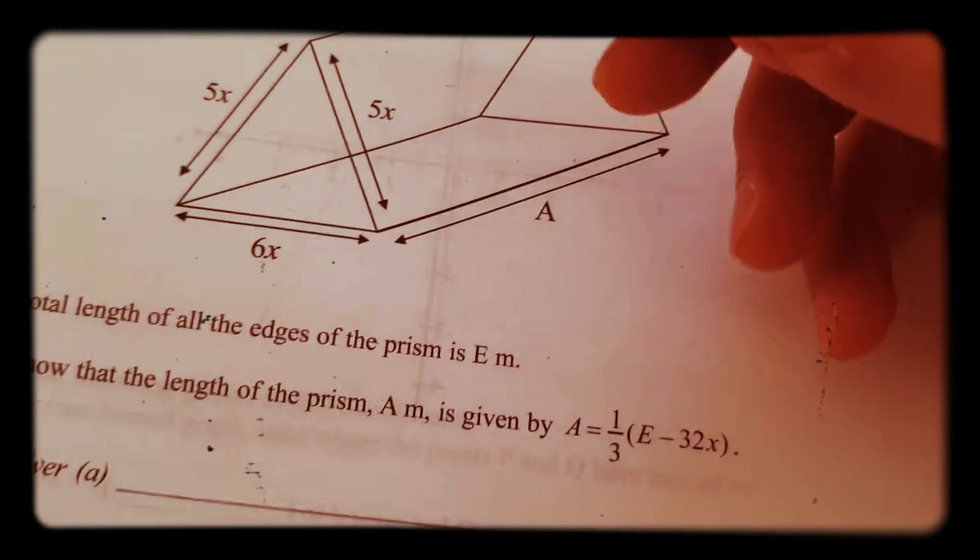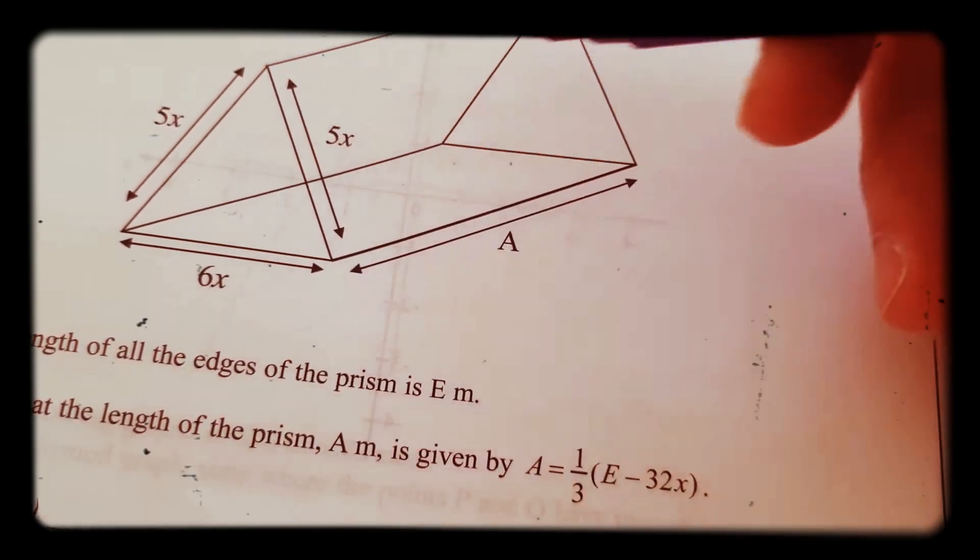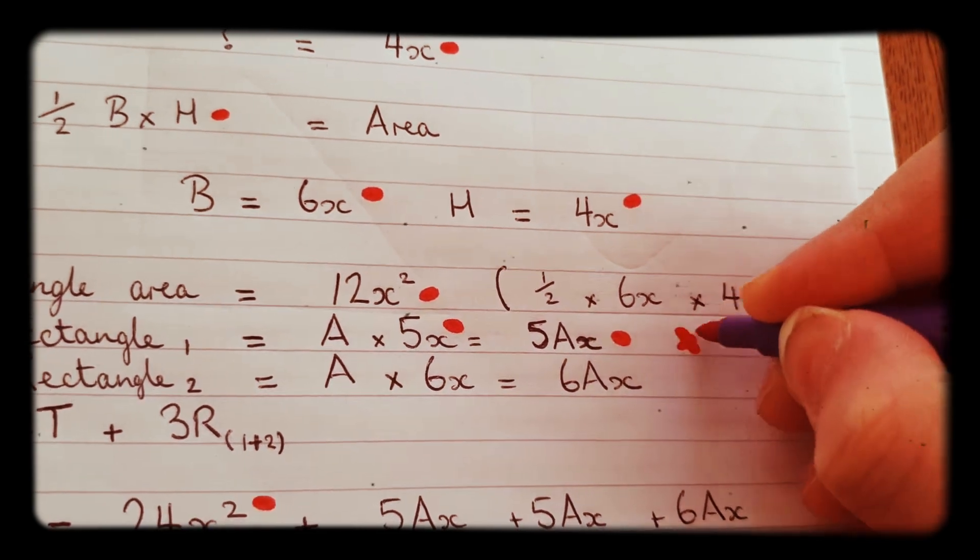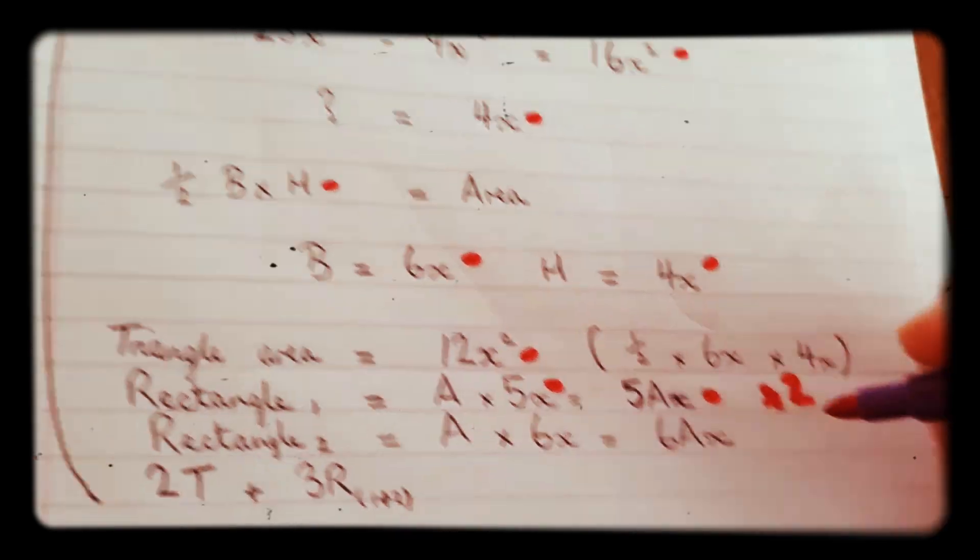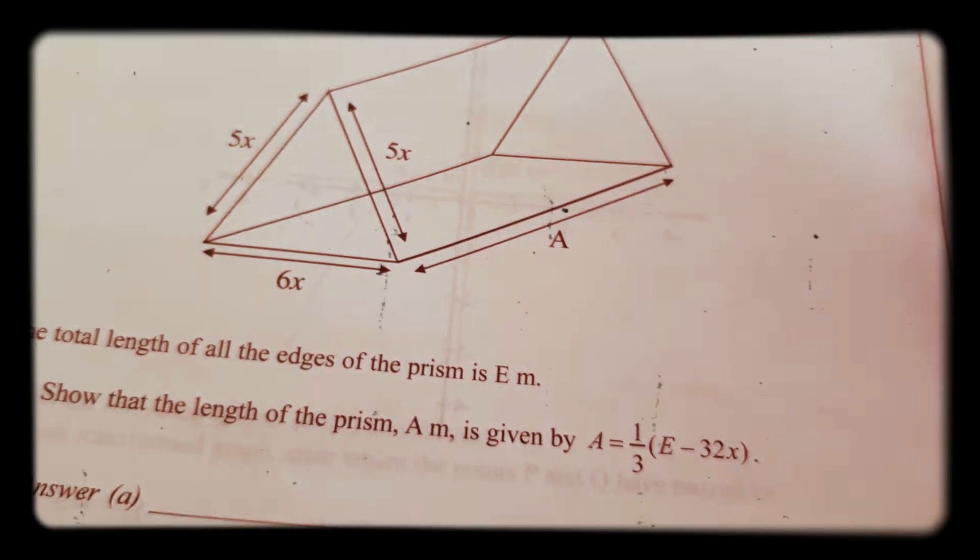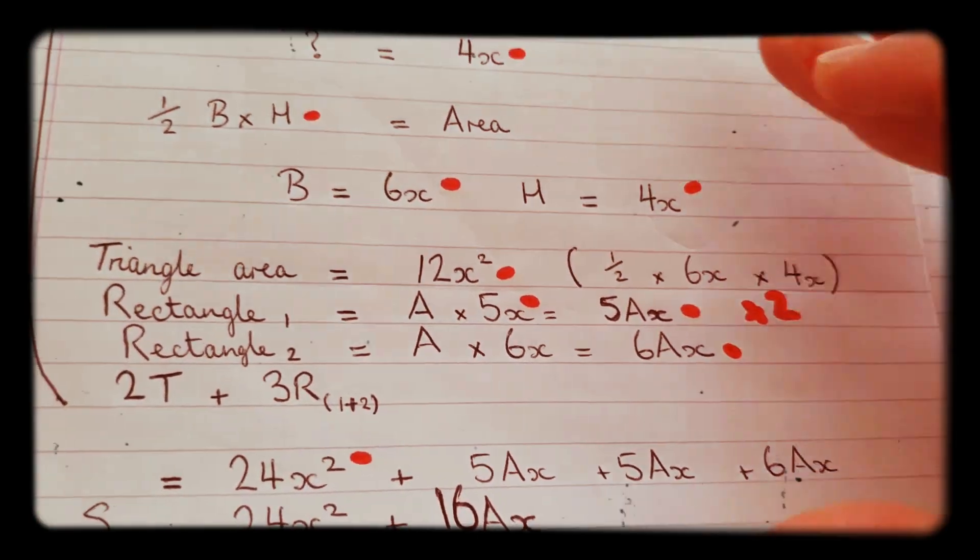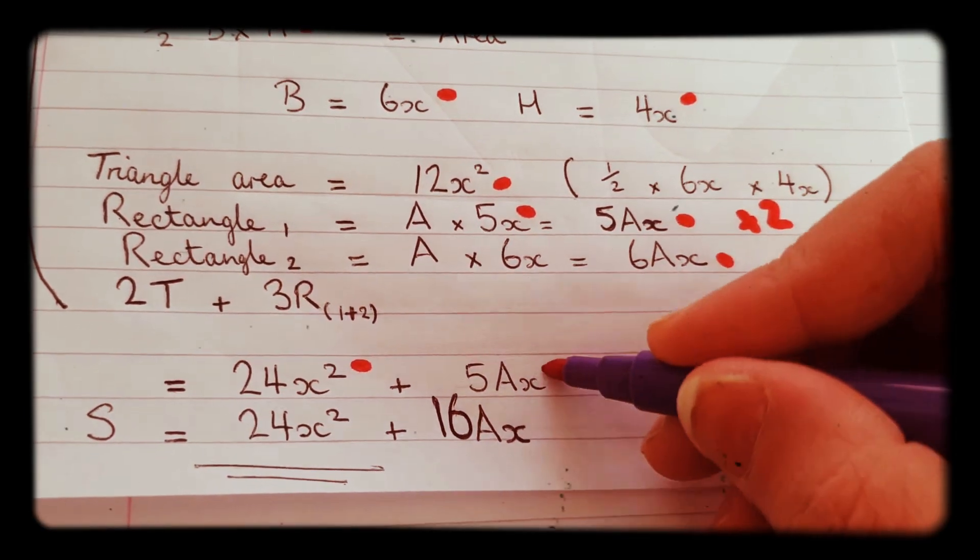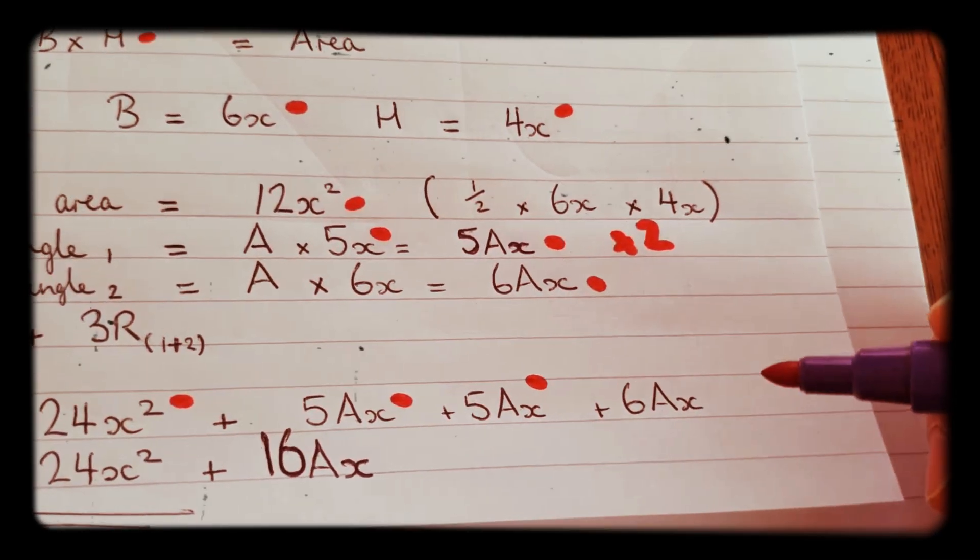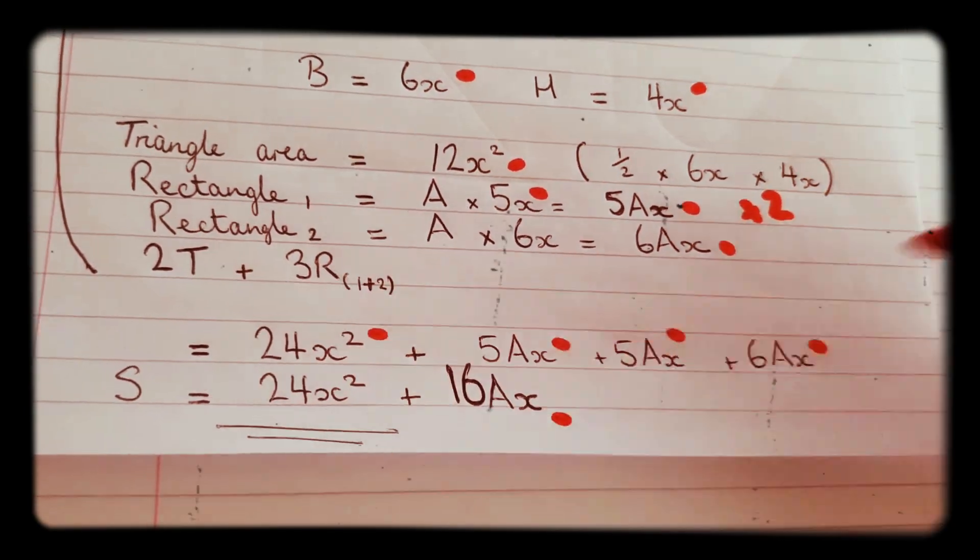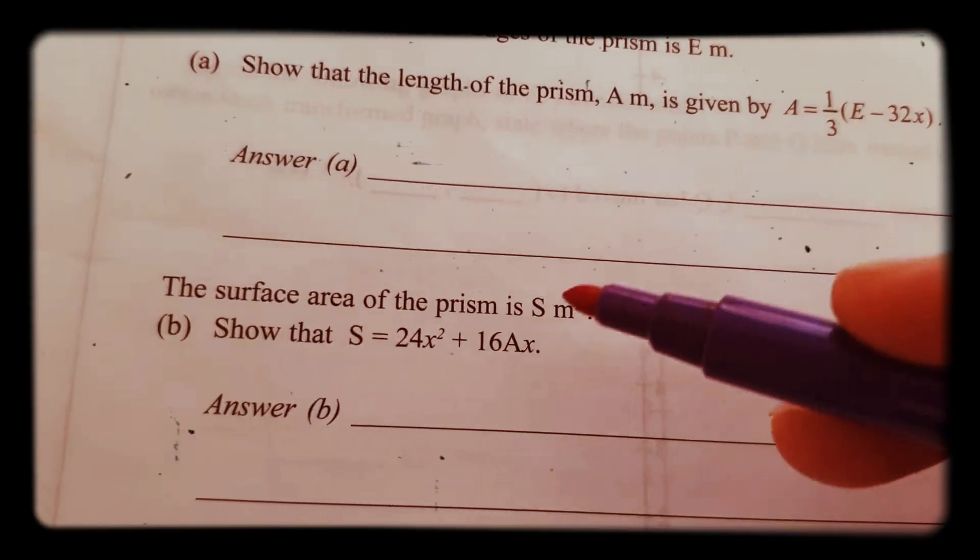Now rectangle one and two - that one and that one which is the same as the other side - the area of the rectangle is A times 5x which is 5Ax, and we've got two of those. Now the base rectangle is 6x times A, so we need to work out that and add that on, and that will be 6Ax. Now we add them all up together: you get 24x squared for the two triangles, you get 5Ax add 5Ax for the two identical rectangles, plus 6Ax for the base rectangle, and then you'll get 24x squared plus 16Ax, and that solves the question.